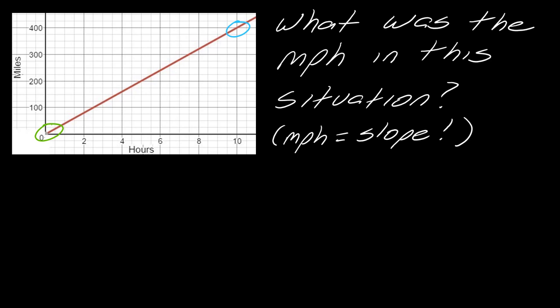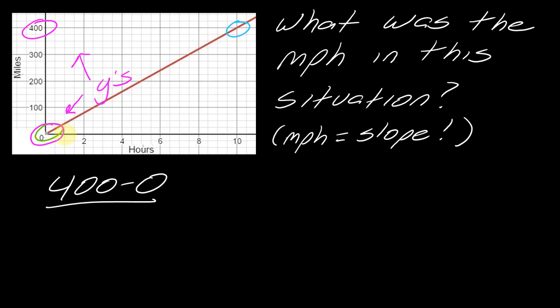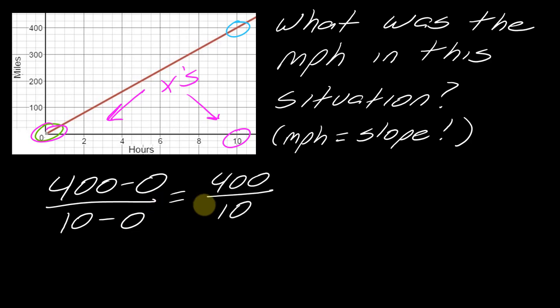First, select two points — these really are the best two for this example because they're the easiest to read on their axes. I reference the blue point: coming over to read where it's hitting on the y-axis gives 400, and the green point is at zero on the y-axis. So I take 400 minus 0. Now referencing the x-axis, I've got 0 and 10. This becomes 400 over 10, which is 40. So that's 40 miles per hour — the y-axis over the x-axis gives you your rate.